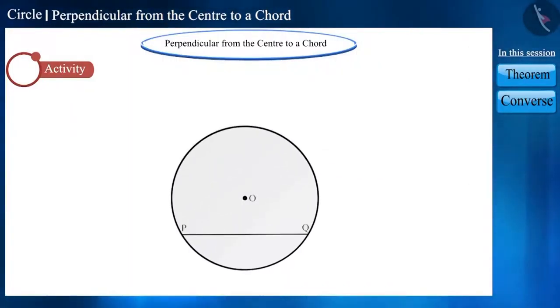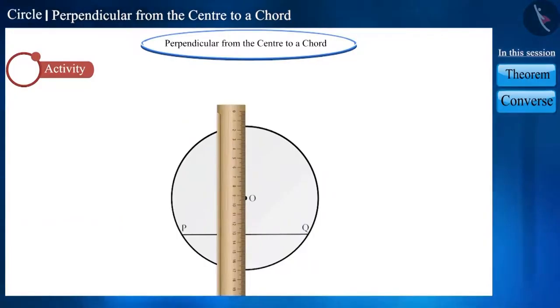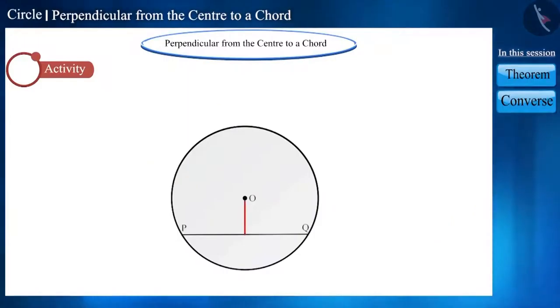Now fold the circular paper in half so that one part of it covers the other part completely. Now open it like this. From the center of the fold, draw a line on the chord. Let's call the point at which this line intersects chord PQ as point T.